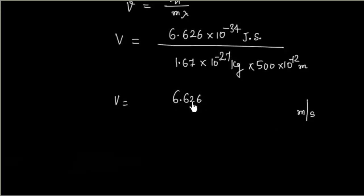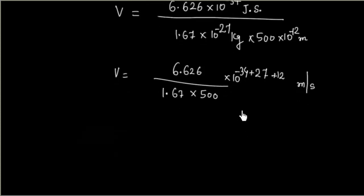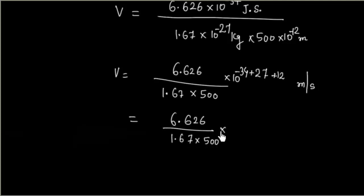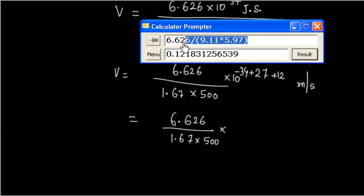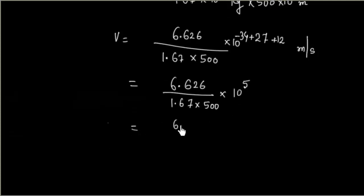So we will have 6.626 divided by (1.67 × 500), and for the powers of 10: −34 + 27 + 12 = 5. So this is (6.626)/(1.67 × 500) × 10⁵. We can cancel two zeros from 500, giving 6.626/(1.67 × 5) × 10³ meter per second.